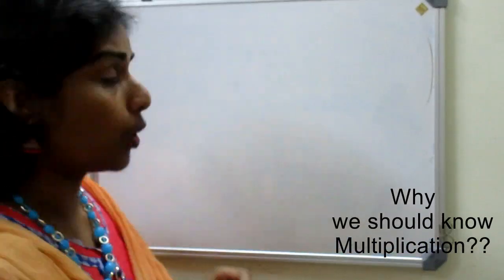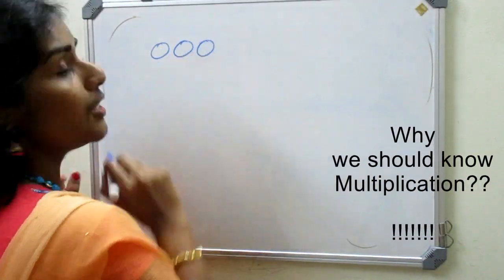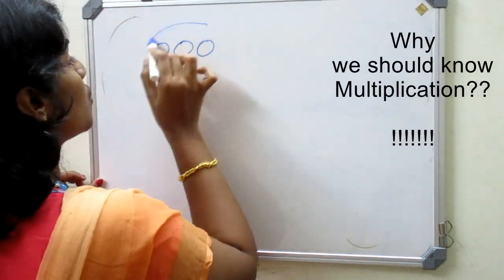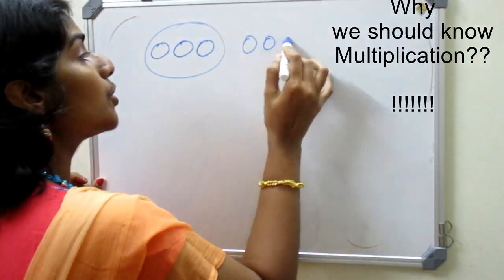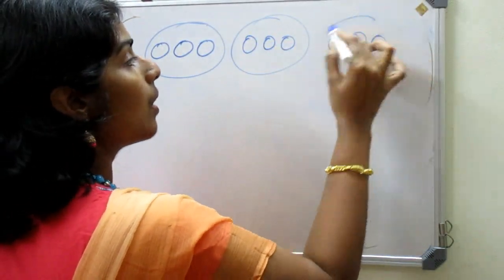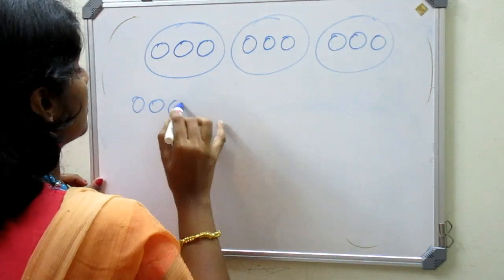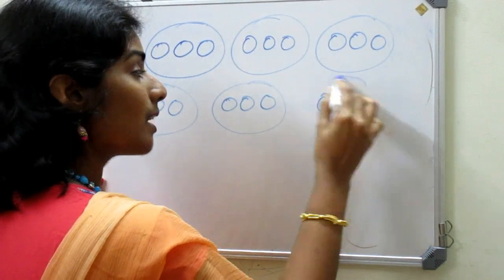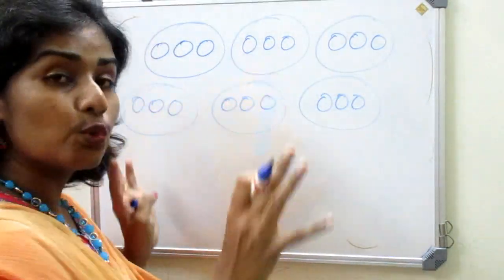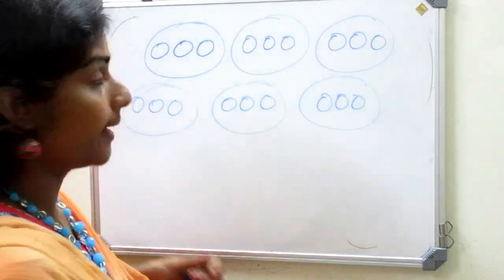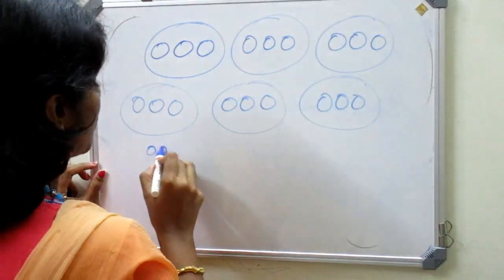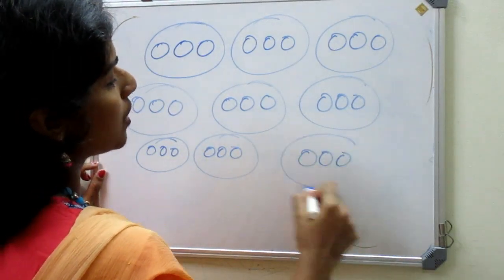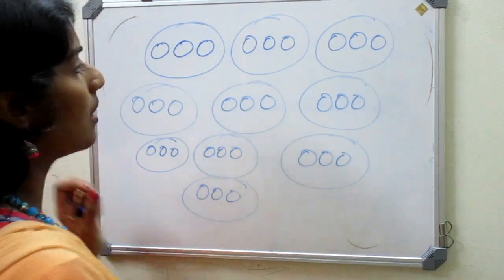I want to give 3 balls each to my 10 friends. So how many balls do I need? If I don't know multiplication, I will have to either count on my fingers or draw pictures and add them together.